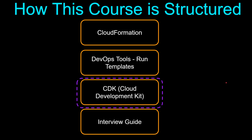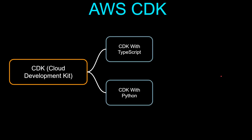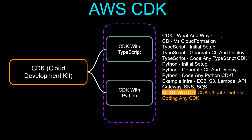The next section is CDK, or Cloud Development Kit. I'm going to cover both CDK with TypeScript and CDK with Python. We'll start with what CDK is, why it's needed, and the differences between CDK and CloudFormation. Then we'll jump into the TypeScript and Python sections and spin up EC2, S3, Lambda, API Gateway, SNS, and SQS using CDK. Don't worry — you don't need to know coding to use CDK. I'll show you how to generate sample boilerplate code, look up the reference guide, and copy-paste the right sections. The must-watch lecture for this section is a CDK cheat sheet for coding any CDK infrastructure.